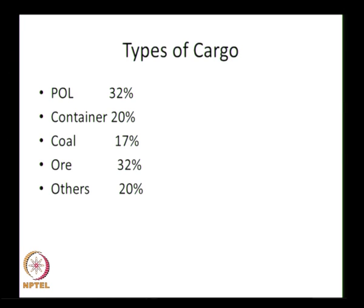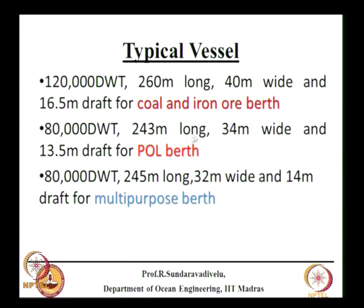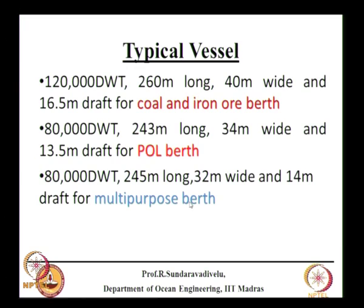We will be discussing about the vessel size that will be used for coal and iron ore, for POL, multipurpose berth, and containers. For a structure we are designing for Kopalpur Port Limited, based on the number of vessels and optimization of cost, the vessel size will be determined. It is preferable to go for coal and iron ore with a 120,000 DWT vessel. We may use vessels from 80,000 to 120,000 DWT. If designing for 120,000 DWT, smaller vessels can also be used. Dimensions are about 260 meters long, 40 meters wide and 16.5 meters draft. The draft controls the design, whereas the length determines what should be the length of the berth.